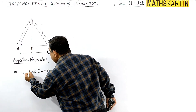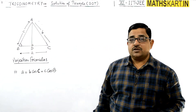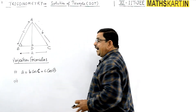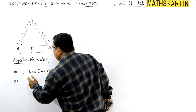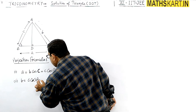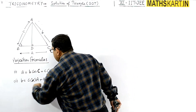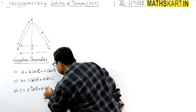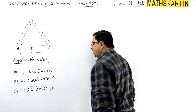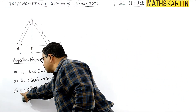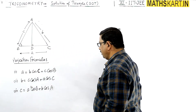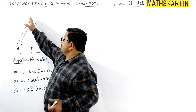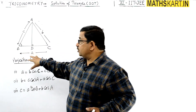The three projection formulas are: first, a = b·cos C + c·cos B; second, b = c·cos A + a·cos C; and third, c = a·cos B + b·cos A. The capital letters are angles. These follow a cyclic pattern with sides a, b, c and angles A, B, C.